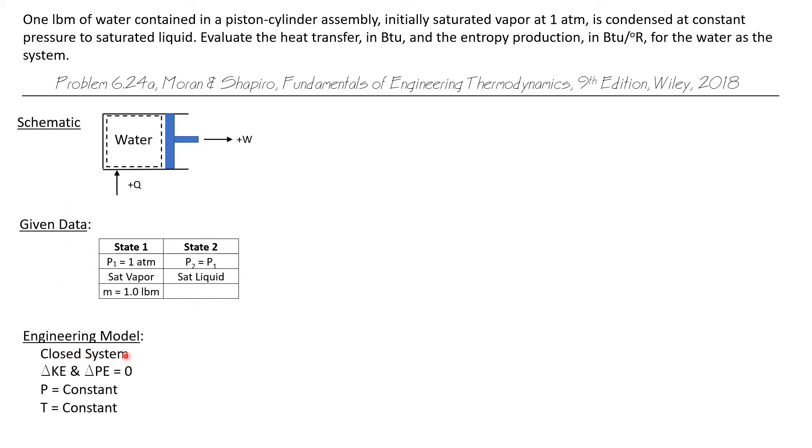We're going to model this as a closed system. We're going to ignore any changes in kinetic and potential energy as being completely insignificant. It was given that it was a constant pressure process, but since we started out as a saturated vapor and ended as a saturated liquid and all points of the process lie under the vapor dome, then it also is a constant temperature process. We want to find the heat transfer that takes place during this process and also the entropy production.